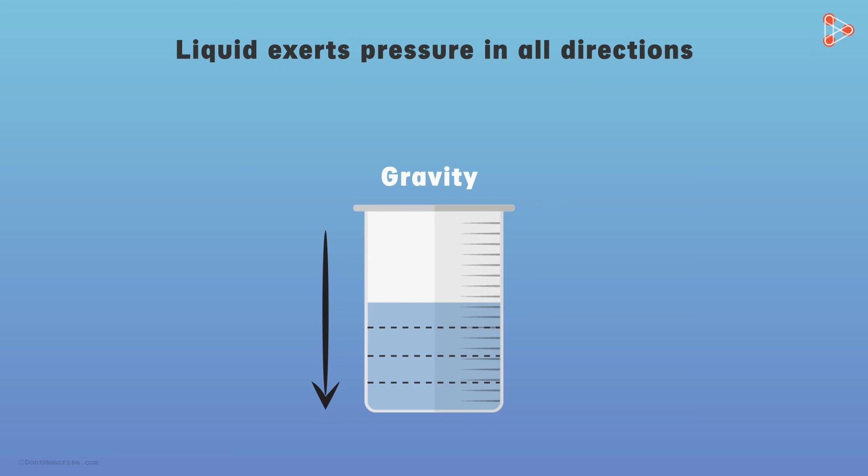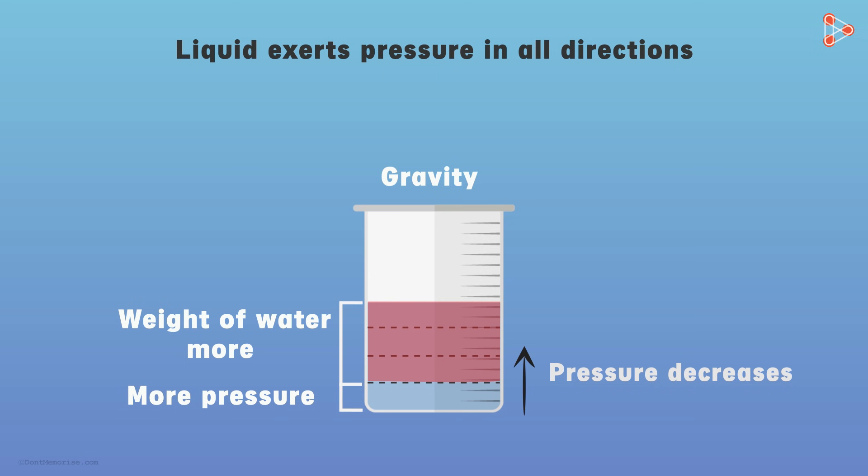Due to this pull, water exerts downward pressure and this pressure is uneven throughout. That is, the bottom layer experiences more pressure than the top layer. This is because the weight of water above the bottom layer is more, and the pressure decreases as we go upwards.